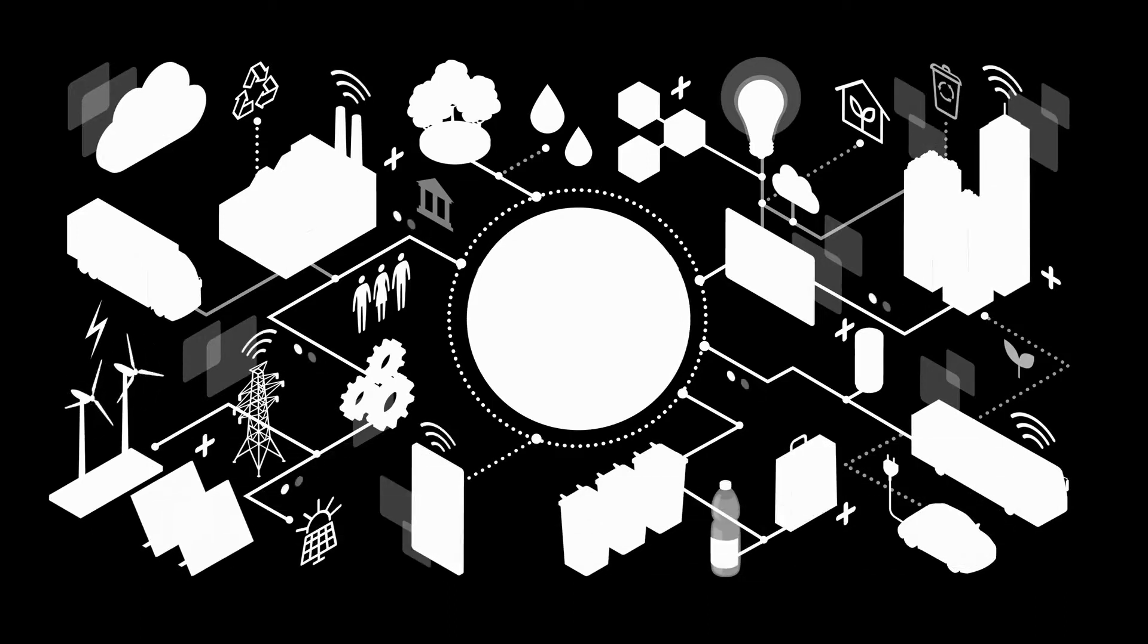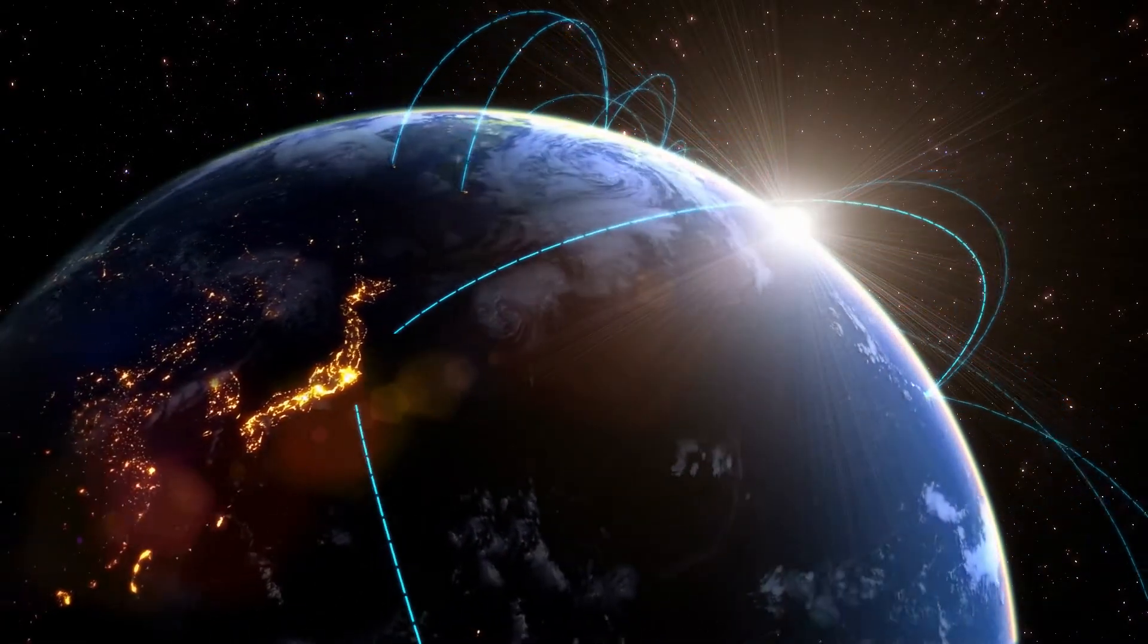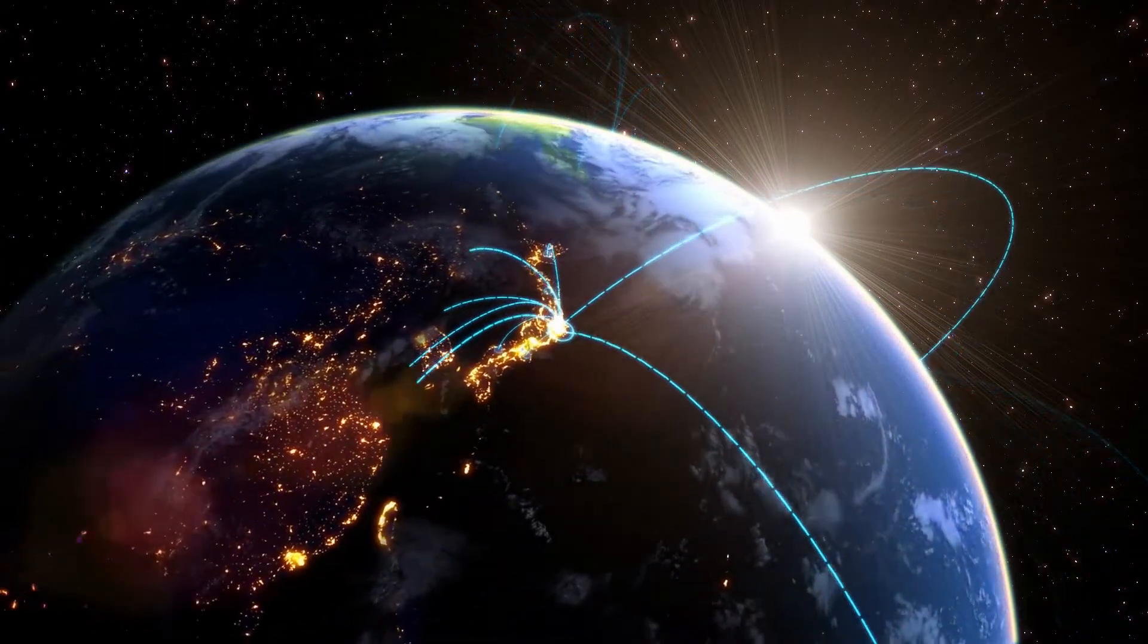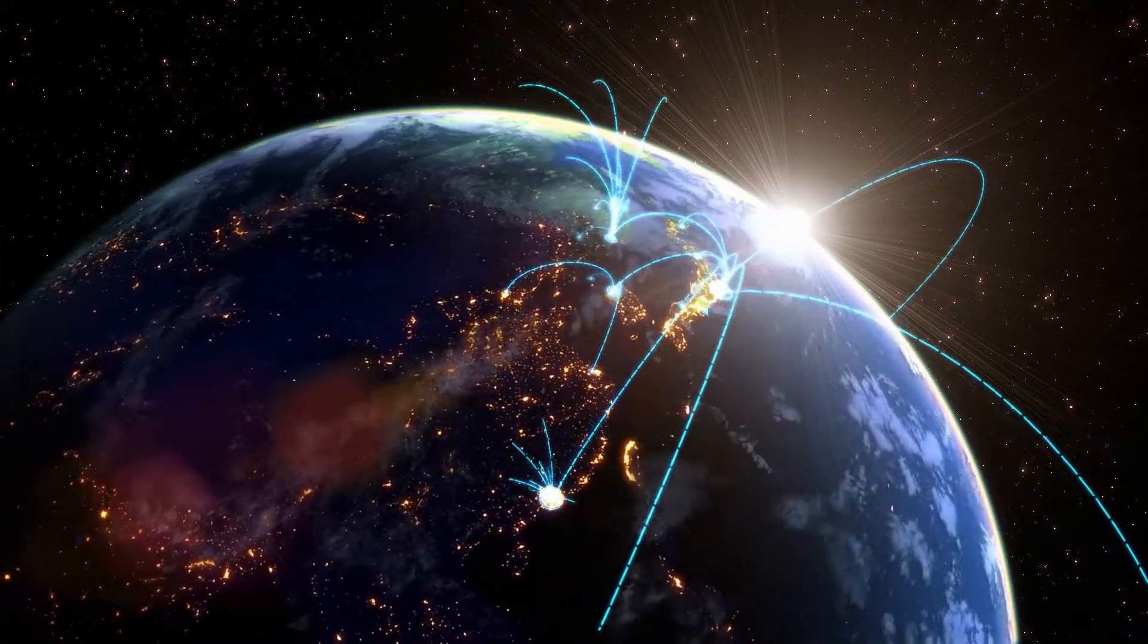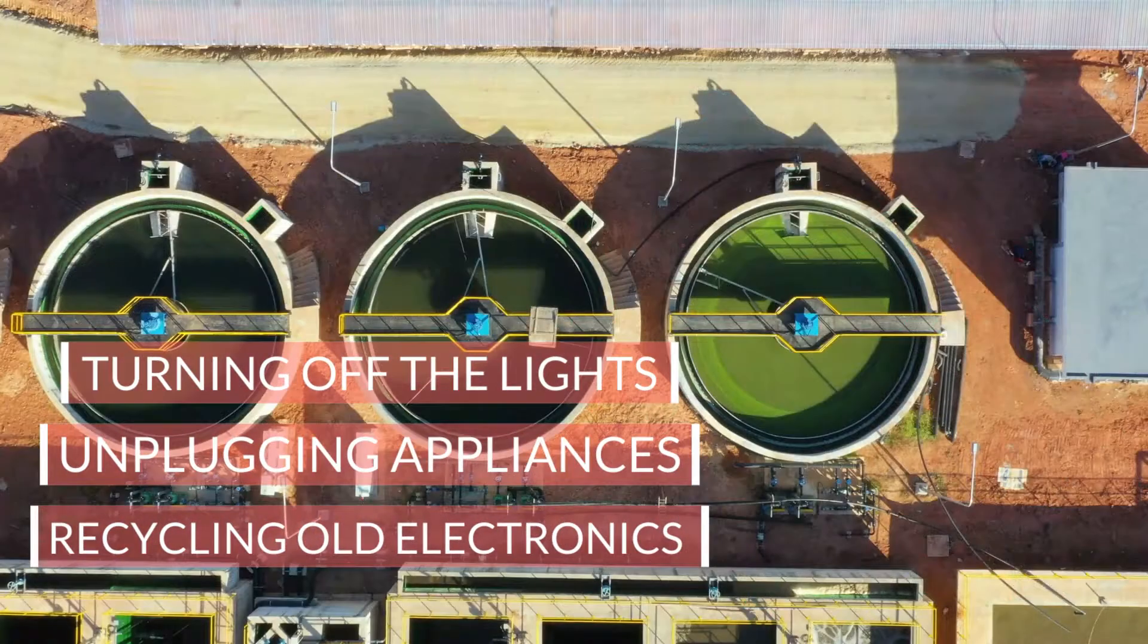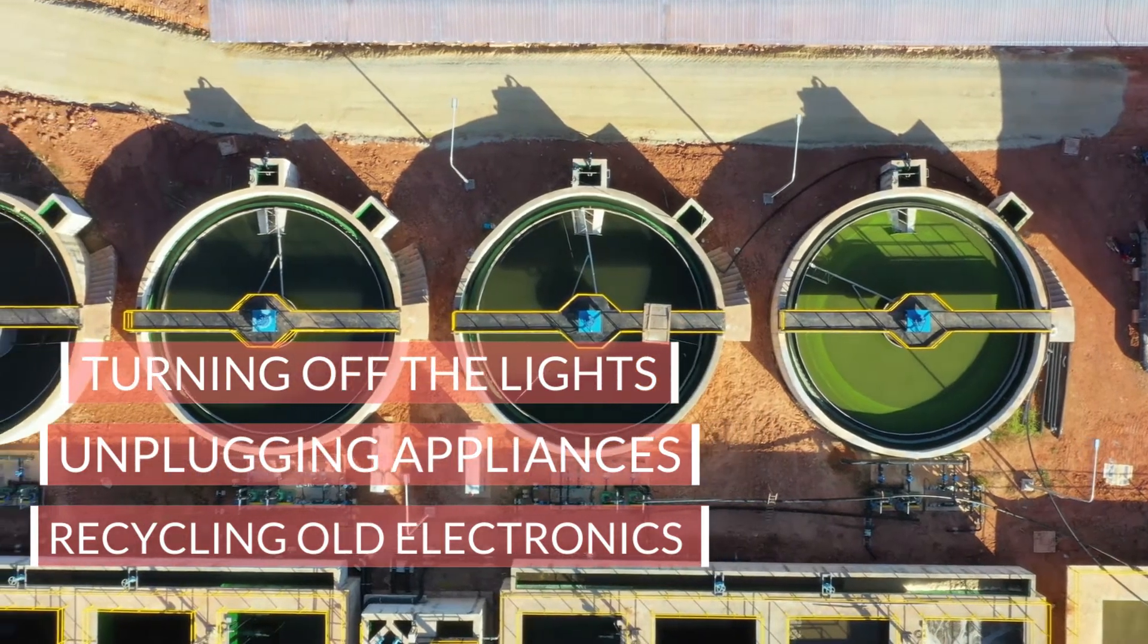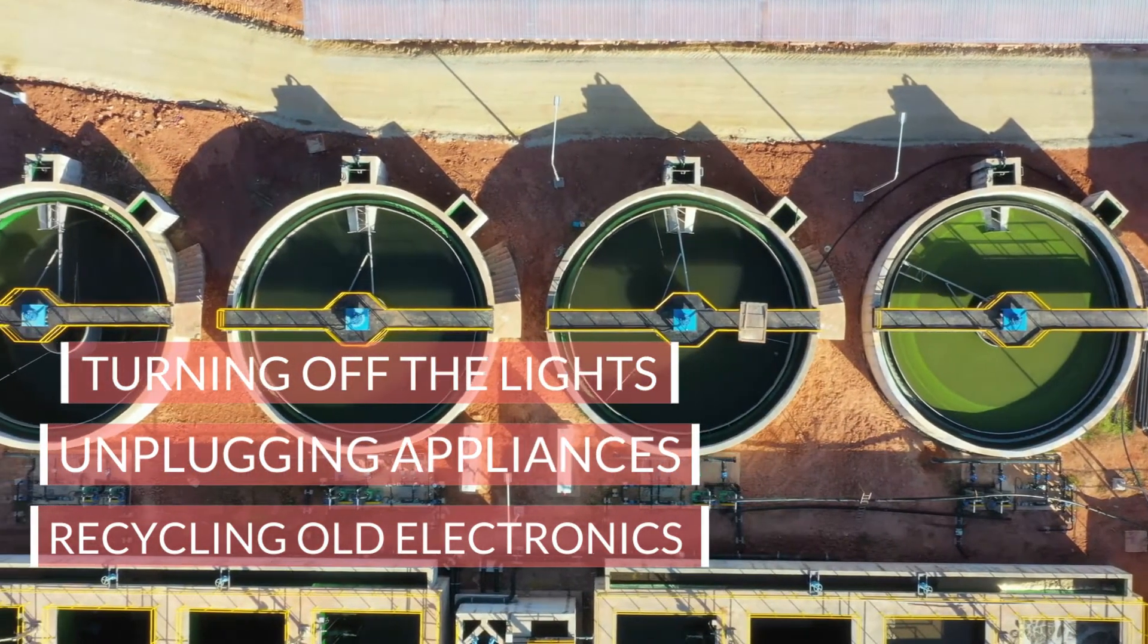Now let's talk about what energy conservation is. Energy conservation is the act of using less energy to produce the same or similar results. It's a way to save money and reduce pollution. There are many ways to conserve energy, including turning off lights when you leave a room, unplugging appliances when they're not in use, taking shorter showers, and recycling old electronics instead of throwing them away.